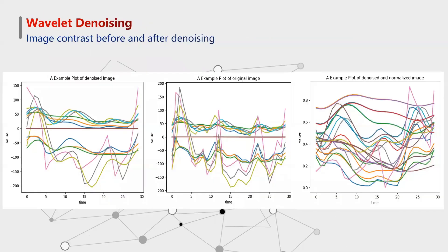Let's see the image contrast before and after denoising. The first image is the original technical indicators image. The second one is the denoised technical indicators image. The third one is the denoised and normalized technical indicator image. The second image shows that the features are much clearer than the first one. It is not hard to find that all the data in the third image are in the same range, and the intersection of the key features is more obvious, which is helpful for the CNN to extract features.